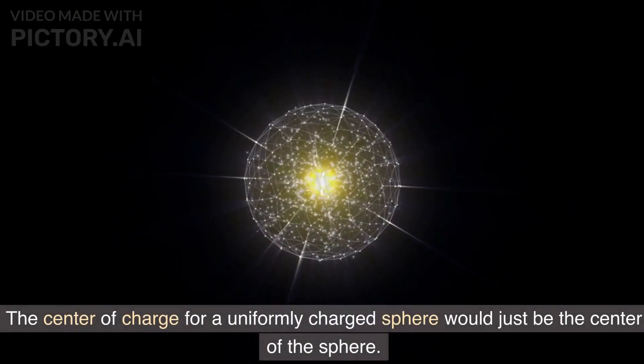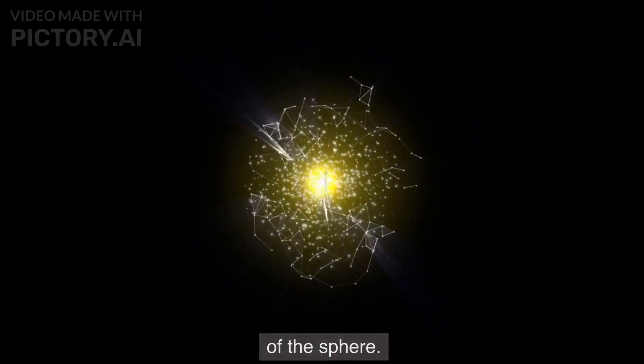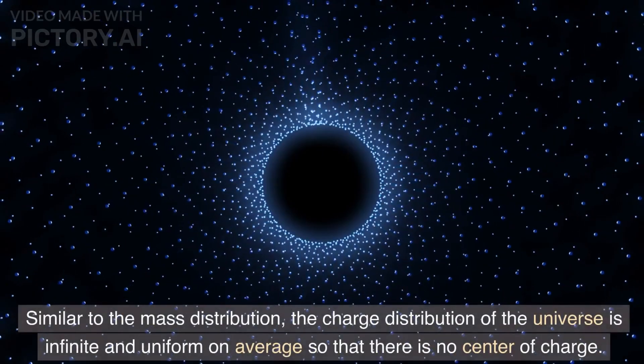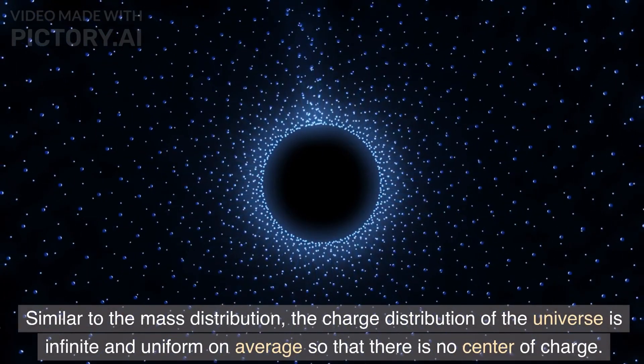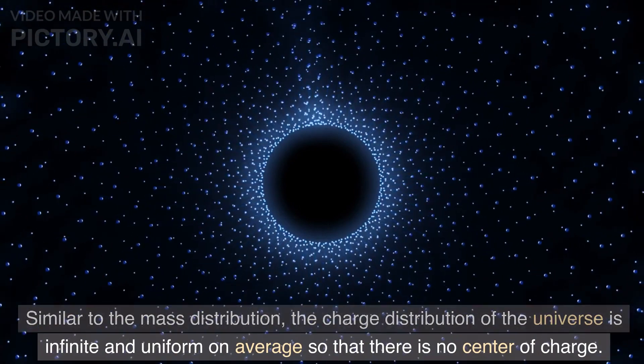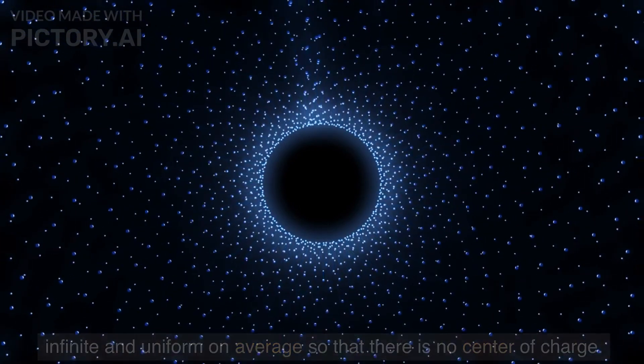The center of charge for a uniformly charged sphere would just be the center of the sphere. Similar to the mass distribution, the charge distribution of the universe is infinite and uniform on average so that there is no center of charge.